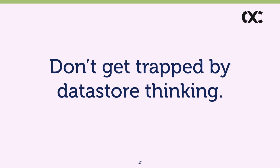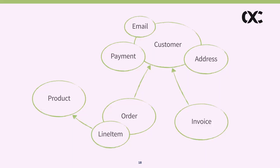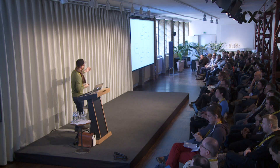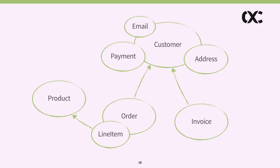The point is: don't start with the data model. In the database, both the order-to-line-item relationship and the order-to-customer relationship are just foreign keys. But we've modeled them differently — grouping order and line item together as an aggregate while making the order-to-customer relationship a reference. There's a conceptual difference between the two relationships that the database simply doesn't express.